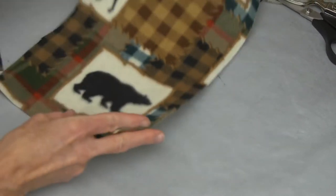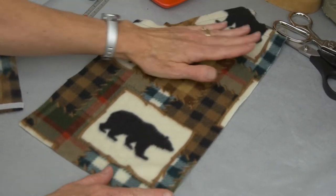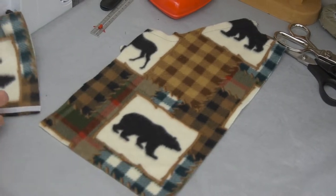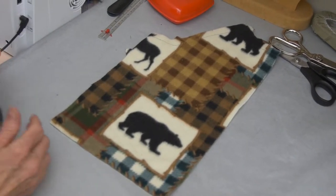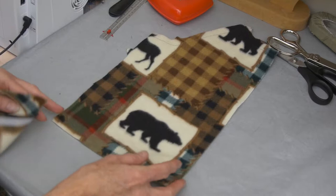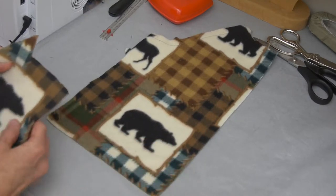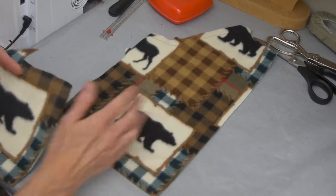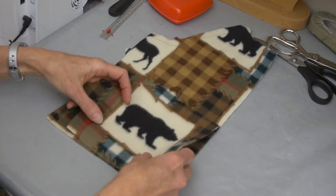Your very first step is placing your pockets. This particular fabric has a print to it, and so I specifically as I cut this out laid the jacket front out so that the pocket would be where the bear is. If you look, then I found another spot on my fabric as I laid it out